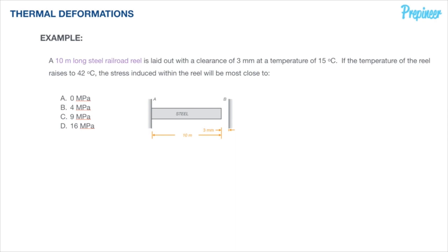We're given the following data: a 10-meter long steel railroad reel is laid out with a clearance of three millimeters before it hits a solid rigid constraint. It's originally at 15 degrees Celsius, and the temperature raises to 42 degrees Celsius. What is the stress induced within?